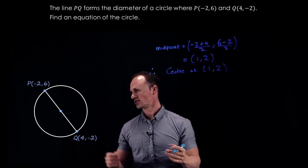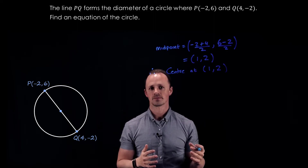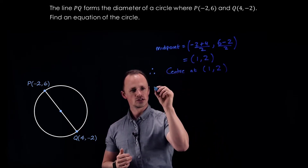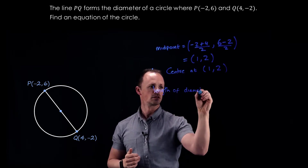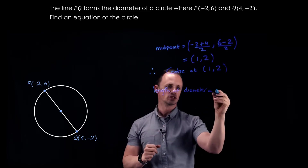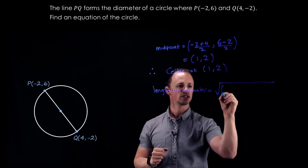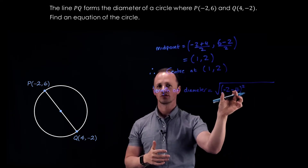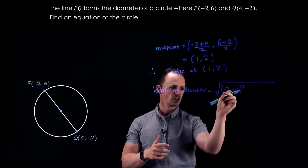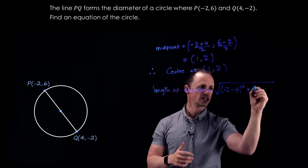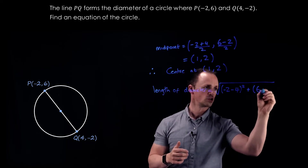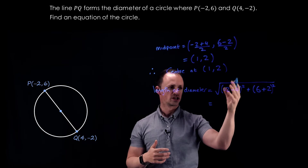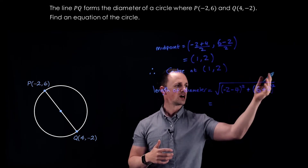Now that we know the center, we need to find the radius. The radius is half the length of the diameter, so we use the distance formula between the two coordinates. We calculate the difference between the x-coordinates: minus 2 minus 4, all squared, and the difference between the y-coordinates: 6 minus minus 2, which becomes 6 plus 2, all squared.